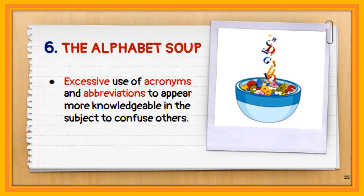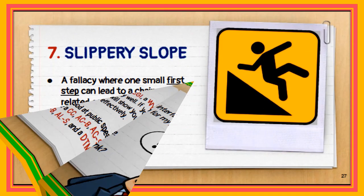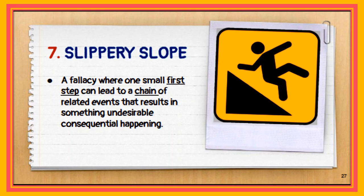The sixth logical fallacy is the alphabet soup. It occurs when one excessively uses acronyms and abbreviations to appear more knowledgeable and confuse others. For example: 'In programming CGI, a WYSIWYG interface doesn't help PHP or CSS very well. If you sign up for personal consulting, I will show you how to program effectively.' By using too much jargon, one may appear to be correct even when they are not.